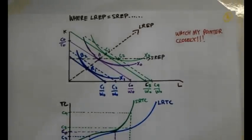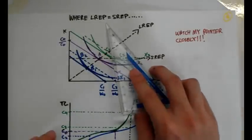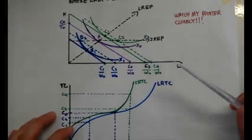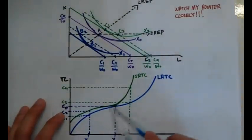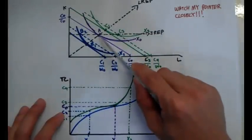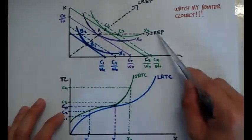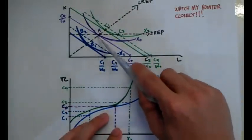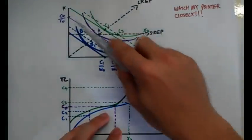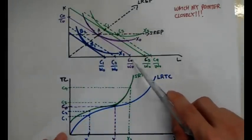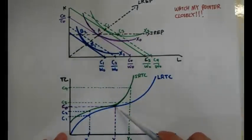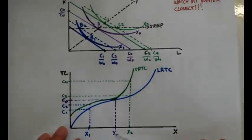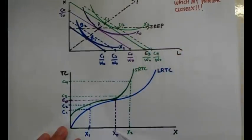Now, where the short run expansion path equals to the long run expansion path, watch my pointer very closely. That is where the short run total cost will meet the long run total cost. Just look at the purple point here at point A. The short run expansion path meets the long run expansion path. We know that the cost is going to be the same in this case, so they both share the same isocost and they are both paying at C0. That is why C0 over here is where the two cost curves will meet, producing at X0.